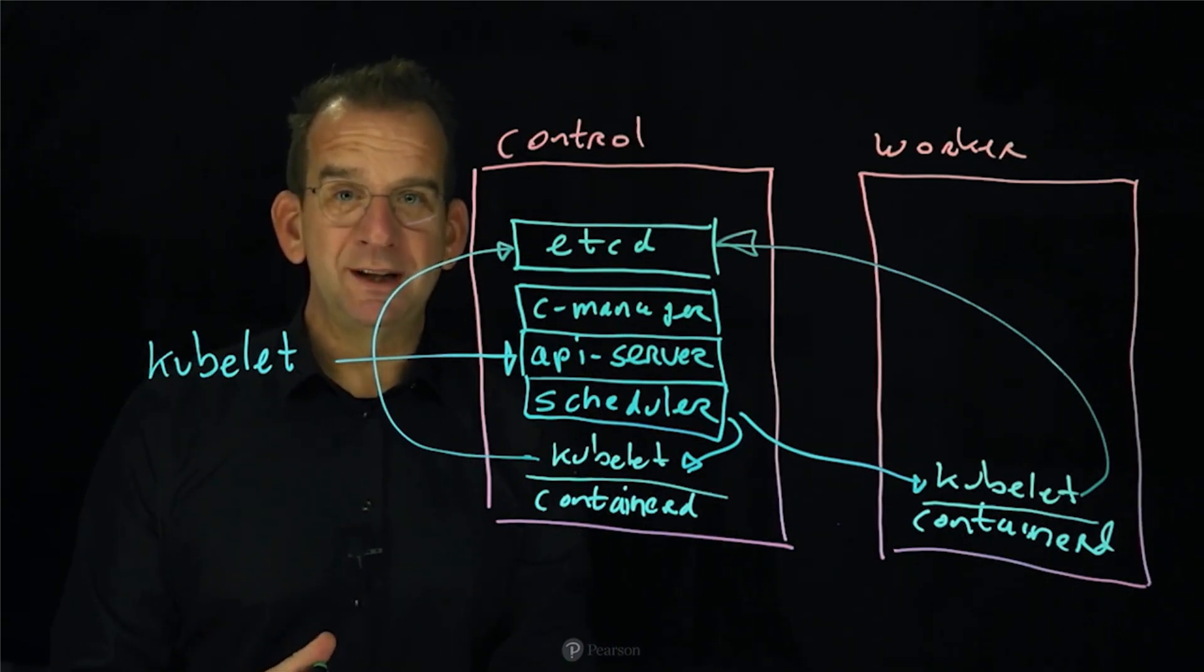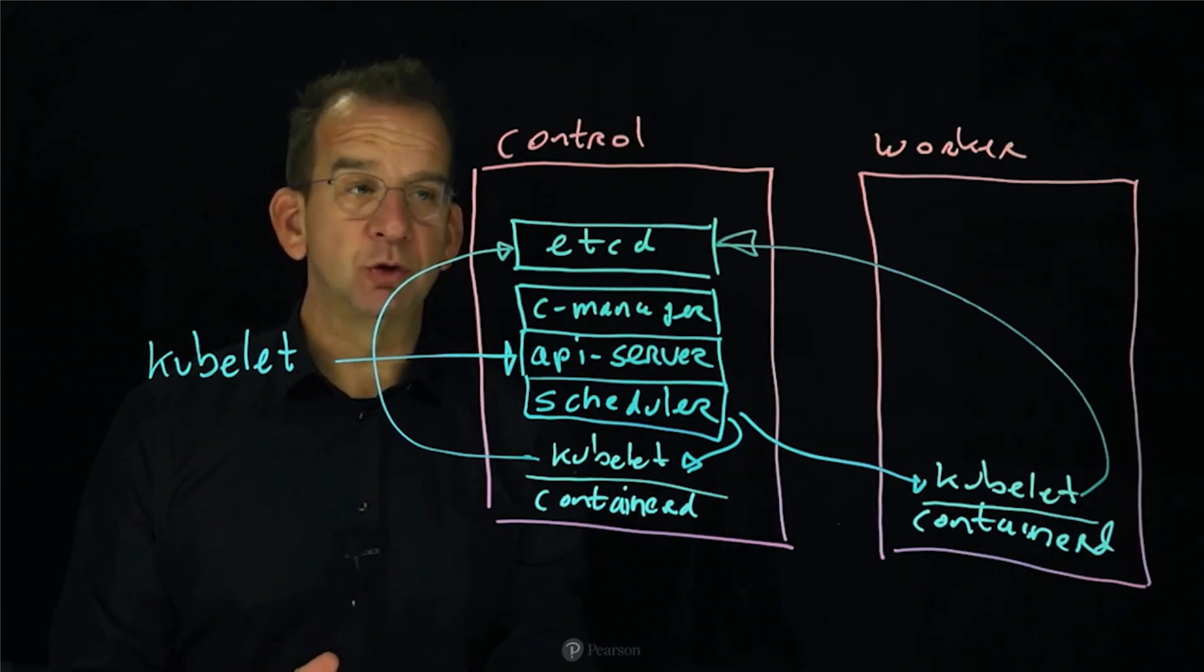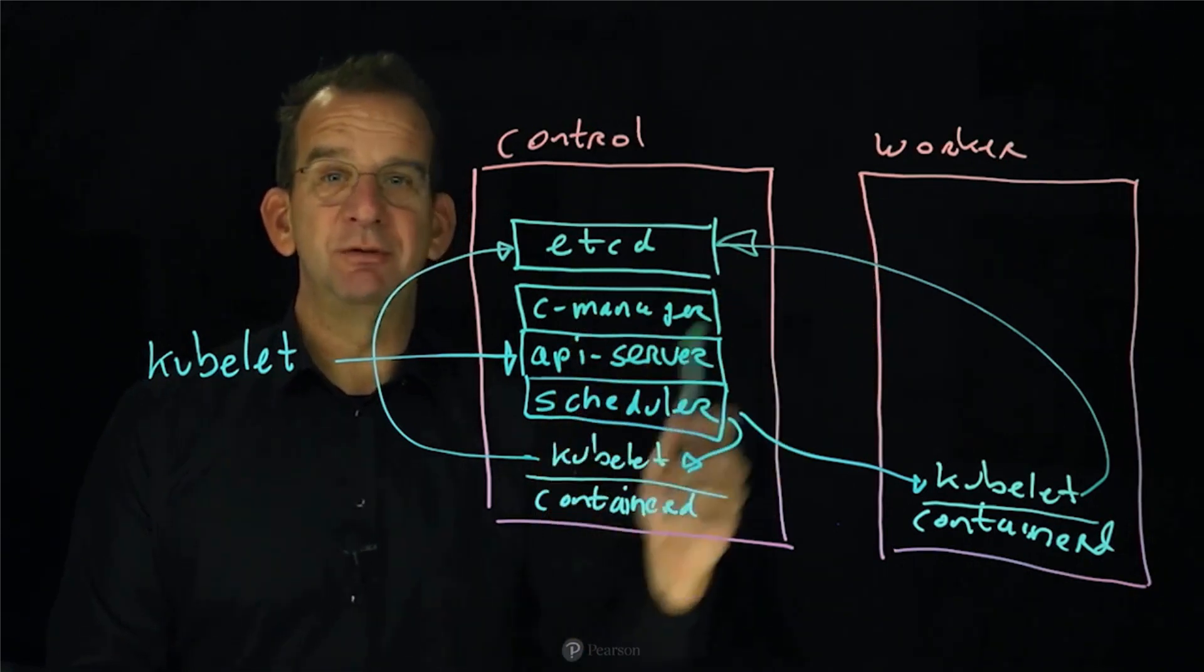Now we are going to use Minikube in this course as an all-in-one solution. So you don't even see these different nodes. But in a typical Kubernetes cluster, you will have multiple controller nodes, multiple worker nodes, to take care of your containers in the Kubernetes environment.